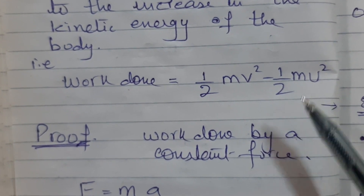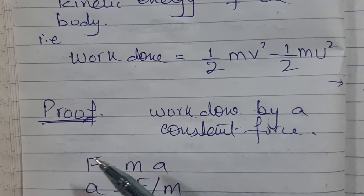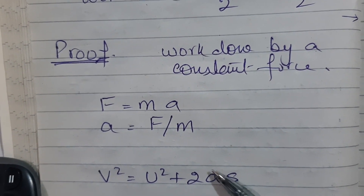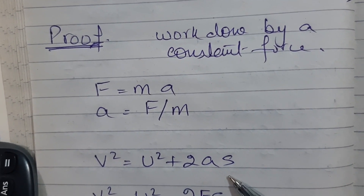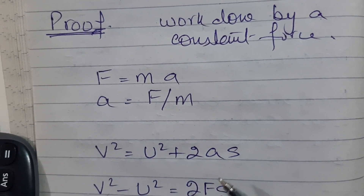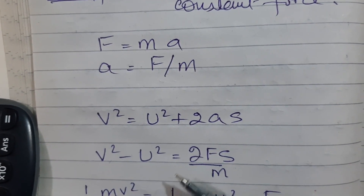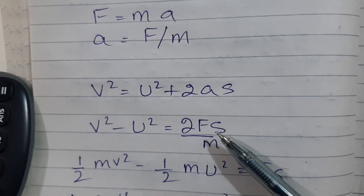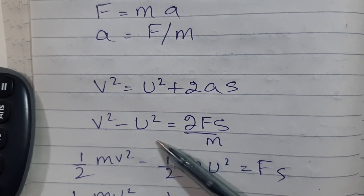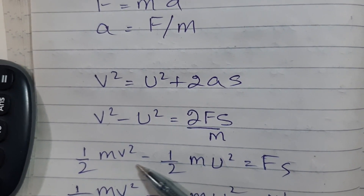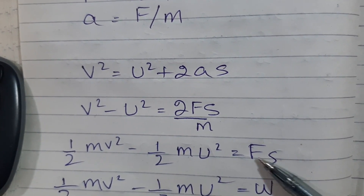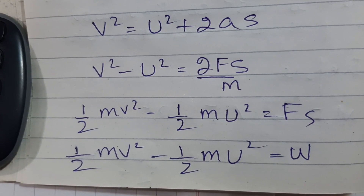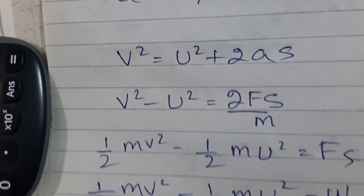Proof: We know F = ma (Newton's second law), so a = F/m. We also know v² = u² + 2as for constant acceleration. Substituting a = F/m into v² = u² + 2as and rearranging gives: ½mv² − ½mu² = Fs. Since Fs is force times distance, this equals work done. This is how the work-energy principle equation is derived.